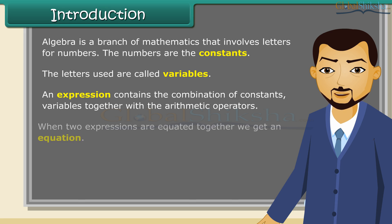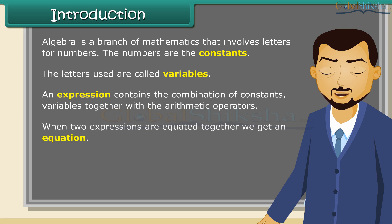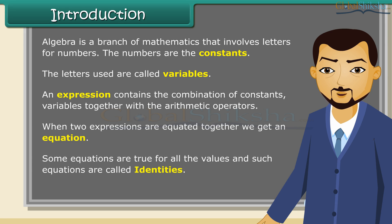When two expressions are equated together, we get an equation. Some equations are true for all the values, and such equations are called identities.